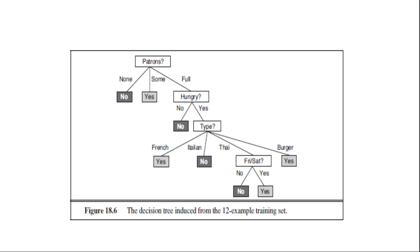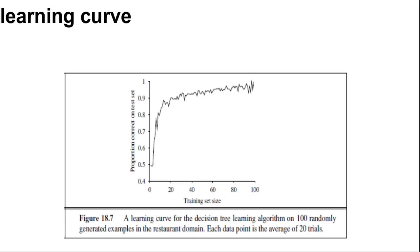We can evaluate the accuracy of a learning algorithm with a learning curve. Learning curve you can see here in the figure. We have 100 examples at our disposal, we can split them into a training set and a test set. We learn a hypothesis H with the training set and measure its accuracy with the test set. We do this starting with a training set of size 1 and increasing one at a time up to size 99.